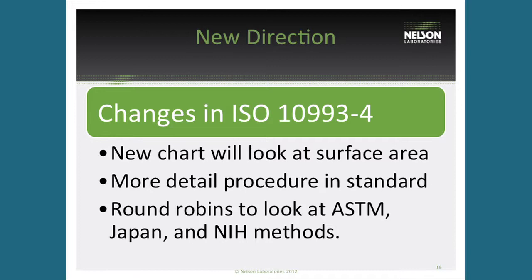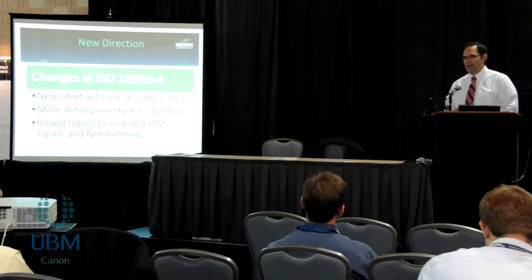If you run an ASTM and a Japanese method, do you get the same endpoints for the same device? To answer that, we're starting round robin testing throughout six or seven labs throughout the world to compare results from NIH, ASTM, and Japan, and also human blood versus animal blood. We want to look at the difference between the methods and the blood sources to see if we can put one single method in the standard that everyone should follow. The standard looks to have a more defined test method and more defined criteria around that method, as well as the updated chart.